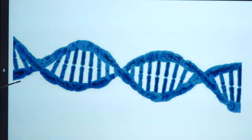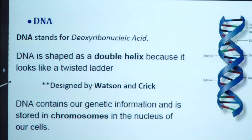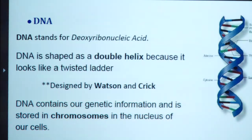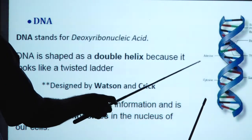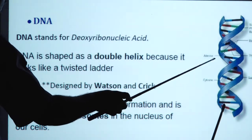This is the double helical structure of DNA — deoxyribonucleic acid. DNA is shaped as a double helix because it looks like a twisted ladder, in which two strands are coiled with each other to form the helix. It was designed by Watson and Crick. DNA contains our genetic information and is stored in chromosomes in the nucleus of our cells. Nucleic acids transmit genetic information from one generation to the other.